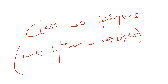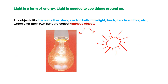Welcome everyone. Today we are going to make a revision of the chapter on light. Light is a form of energy. With the help of light you are able to see things — light rays fall on an object, reflection occurs, and the reflected rays strike your eye so you can see the object.